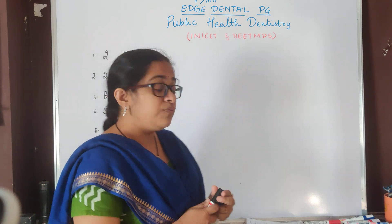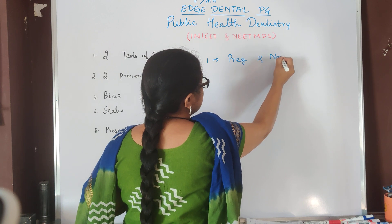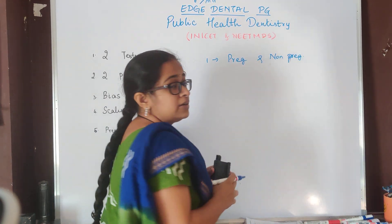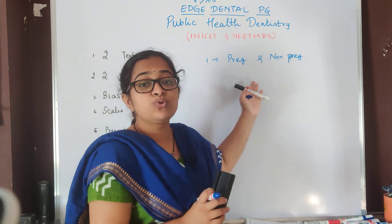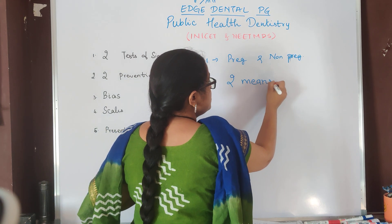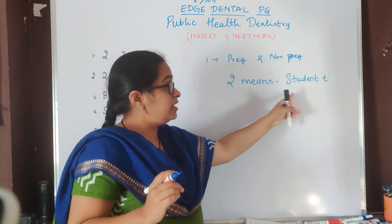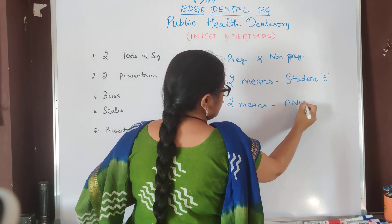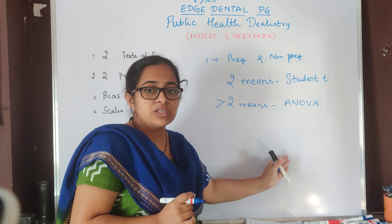The first of the 2 questions on test of significance was related to 2 groups — pregnant and non-pregnant women. Glucose levels of these 2 groups were checked and which test would be used to compare between these 2 groups was the question. Whenever we are comparing between 2 means, it is Student T-test. The other question asked was comparison between 3 groups on a continuous scale — the answer was ANOVA.